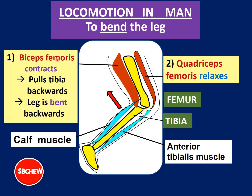To remember these two terms, we need to understand how the names are derived. The word 'femoris' comes from 'femur' because both muscles are next to the femur bone. 'Biceps' means this muscle has two tendons of origin at the top. We don't need to know the details — just know it is called biceps femoris.